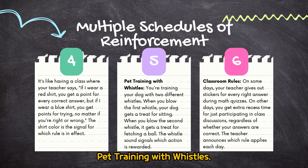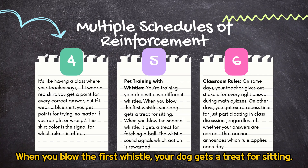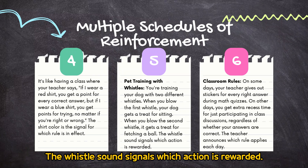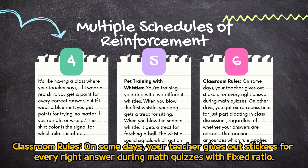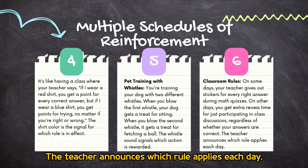Pet training with whistles: you're training your dog with two different whistles. When you blow the first whistle, your dog gets a treat for sitting. When you blow the second whistle, it gets a treat for fetching a ball. The whistle sound signals which action is rewarded. Classroom rules: on some days, your teacher gives out stickers for every right answer during math quizzes (fixed ratio). On other days, you get extra recess time for just participating in class discussions, regardless of whether your answers are correct. The teacher announces which rule applies each day.